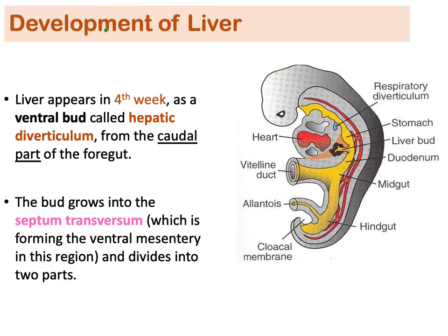As a continuation of the duodenum, we cannot ignore the development of the liver. The liver bud — also called the hepatic diverticulum — appears at the fourth week, which is close to the time of duodenum appearance. It arises from the distal or caudal part of the foregut.